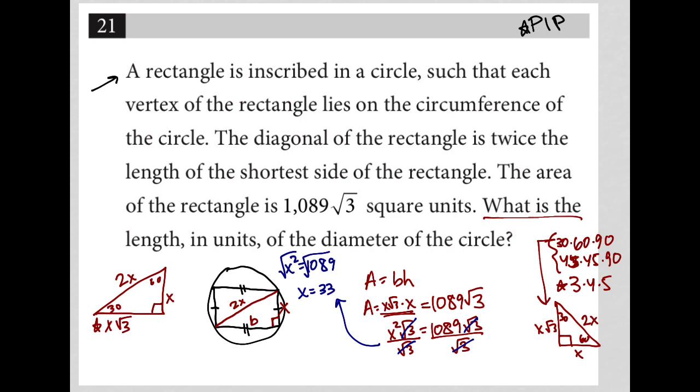But of course I don't want X, I want the diameter of the circle which is 2X. So that's why I'm going to say 2 times X is 66, so my final answer here is 66.